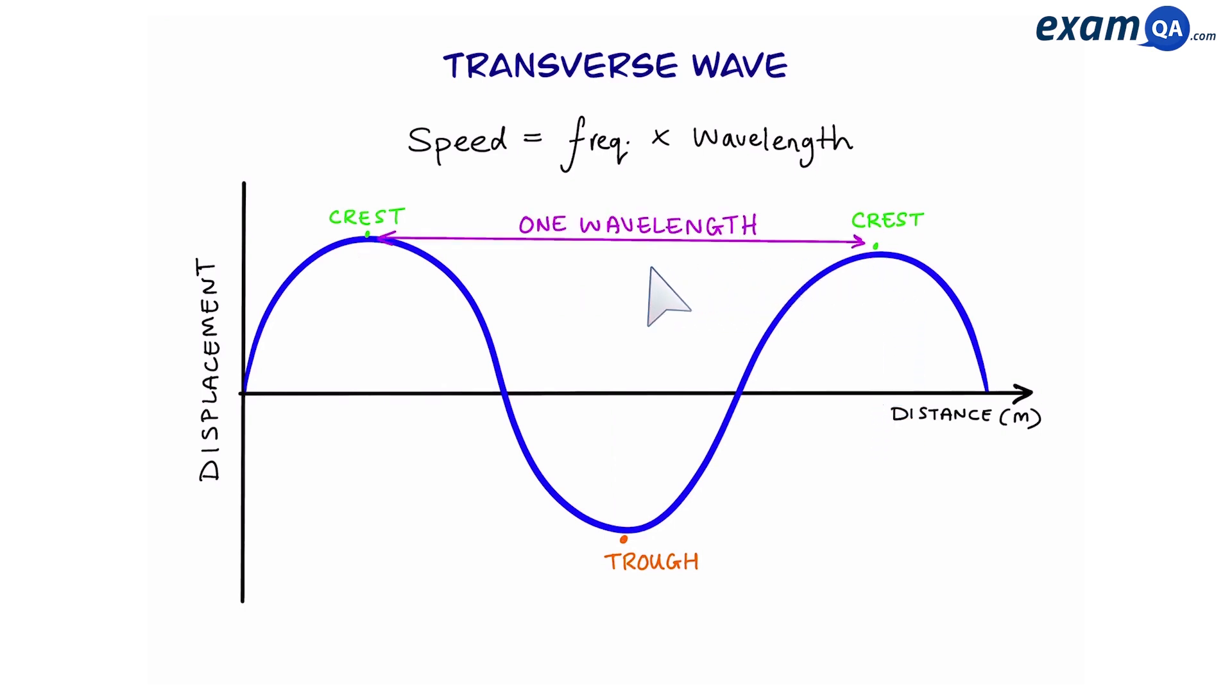Now the next thing is wavelength. Now a wavelength is simply the distance between the same point on the wave. So for example, we can see that here we have from crest to crest. That distance would be one full cycle or one complete wavelength. Now it doesn't have to always be crest to crest. You could pick any point. For example, we could go from here to here. That would be one wavelength. Or from here to here. Or from here to here.